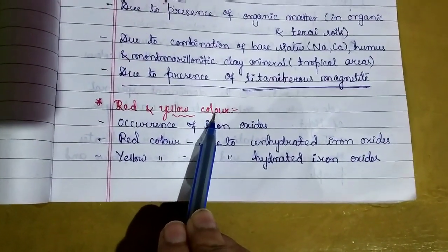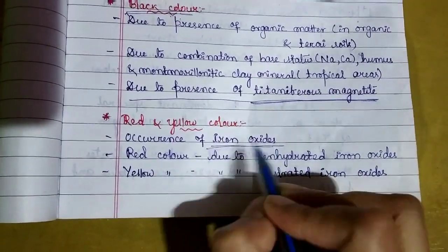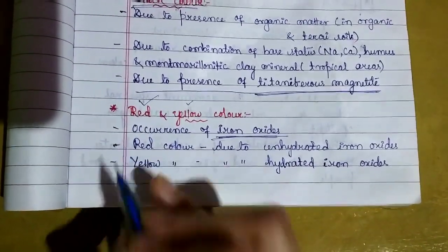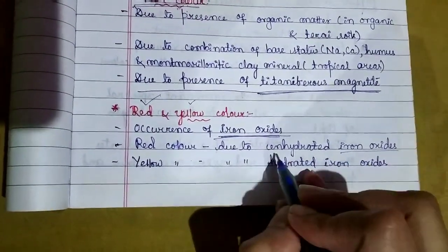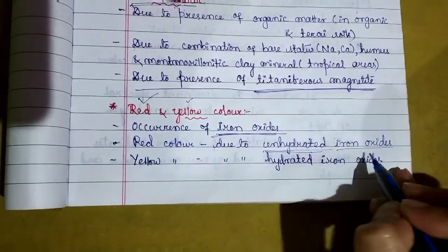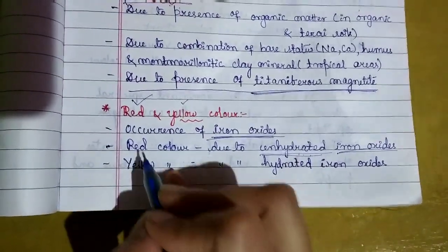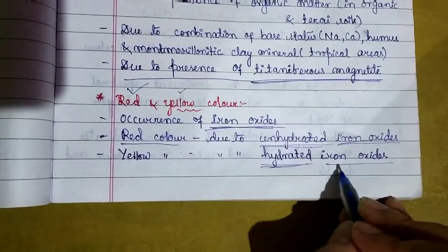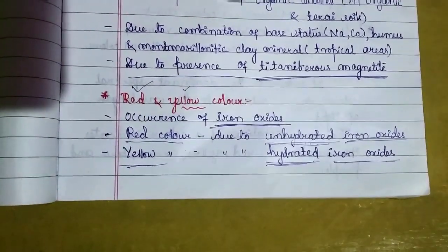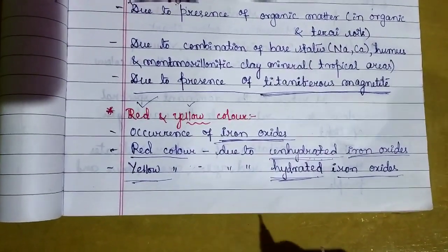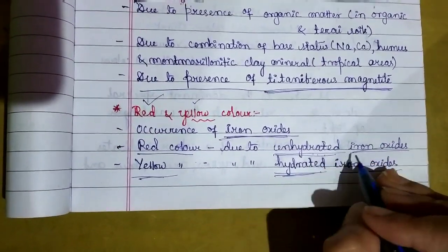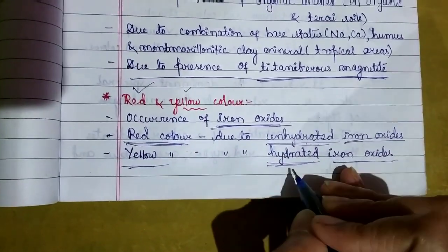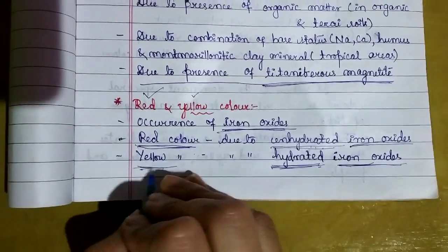Coming to red and yellow color soil, this is because of the presence of iron oxide. Both red and yellow colors are because of iron oxides. Red color occurs when iron oxide is unhydrated, meaning absence of water. If iron oxide doesn't have water adsorbed, the soil color is red. If iron oxide has water adsorbed, meaning it is hydrated iron oxide, then the soil is yellow color.